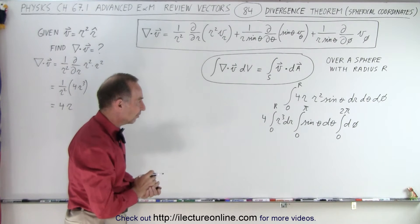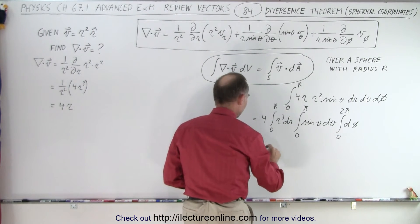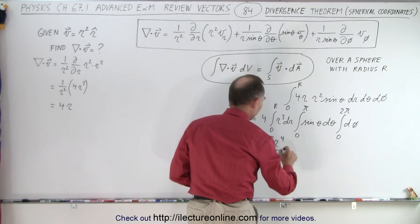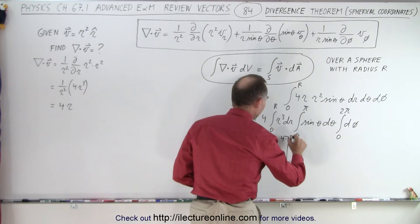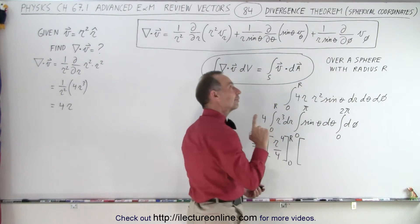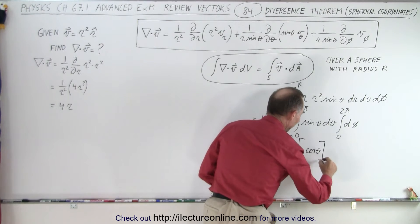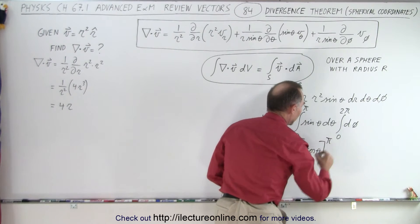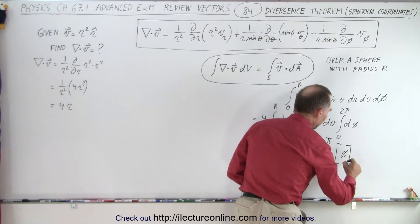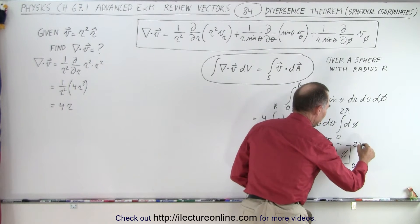These are nicely separated so we can integrate them individually. This equals 4 times r to the fourth over 4 evaluated from 0 to r, times negative cosine of theta evaluated from 0 to π, times phi evaluated from 0 to 2π.